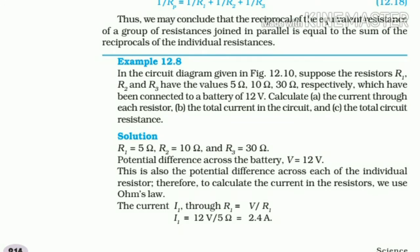In the circuit diagram given in Figure 12.10, suppose the resistors R1, R2, and R3 have the values 5 ohm, 10 ohm, 30 ohm respectively, which have been connected to a battery of 12 volt. Calculate current through each resistor.